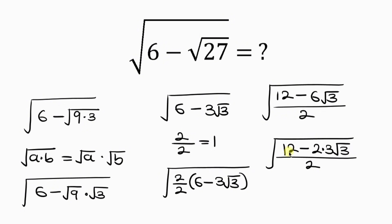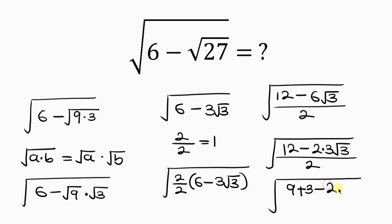Our next step will be for us to split 12 so that we have 12 as 9 plus 3. So 9 plus 3 produces 12, minus 2 times 3 root 3, all over the denominator 2.